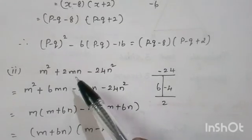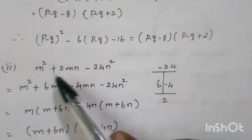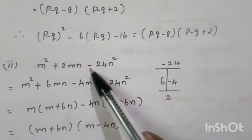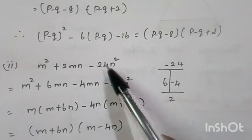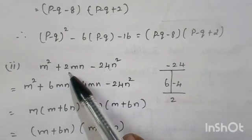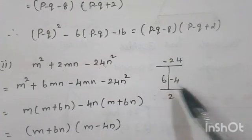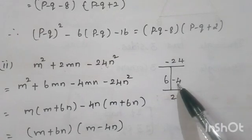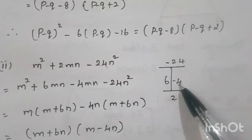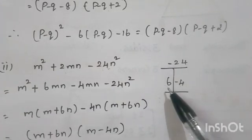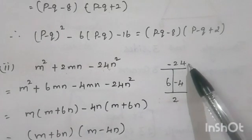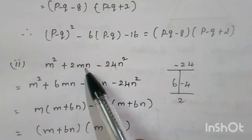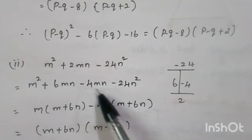Second problem: m square plus 2mn minus 24n square. It is in the quadratic form with two variables. For two variables, consider the last term coefficient, minus 24, as the product value and 2 as the adding value. Which two numbers give product 24? Six and 4. Greater number plus, smaller number minus: 6 times 4 is 24, and minus 6 plus 4 gives minus 2. So this 2mn is rewritten as 6mn minus 4mn.